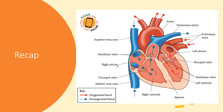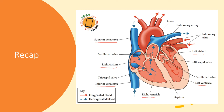You've learned that our heart has four chambers: right atrium, right ventricle, left atrium, and left ventricle. You also learned the five blood vessels connecting in and out of a heart, which are the superior vena cava and inferior vena cava, which help collect the deoxygenated blood from the rest of the body back to the heart.